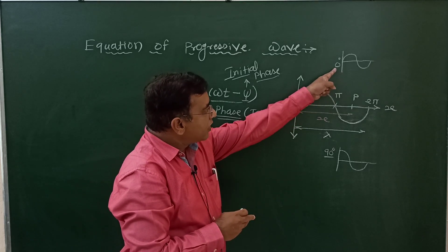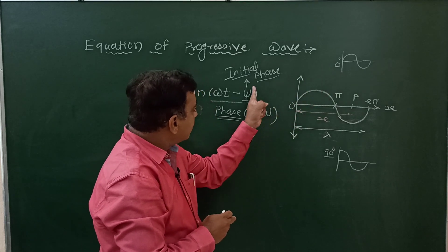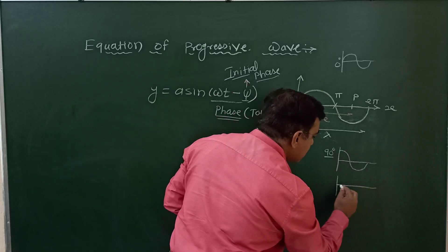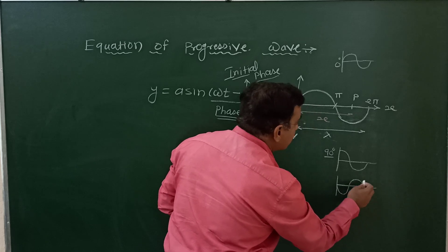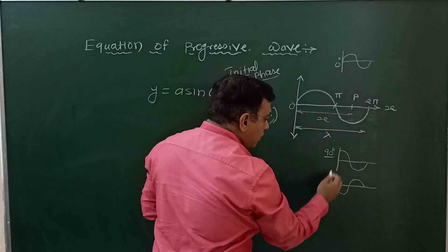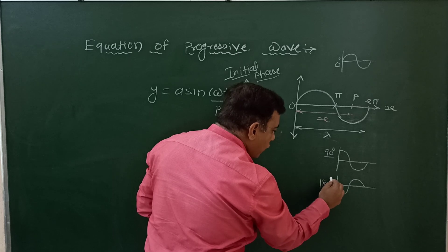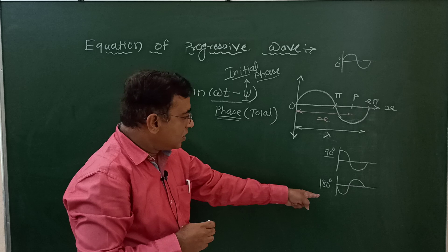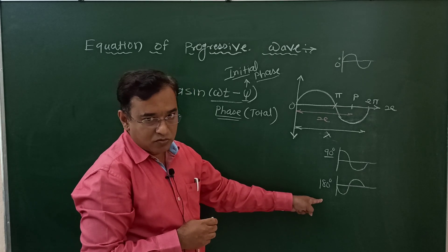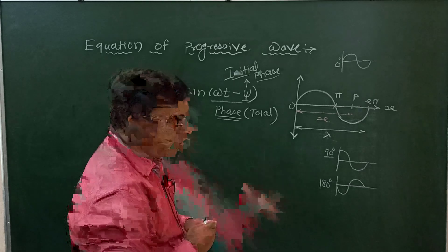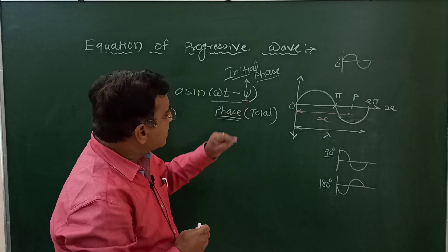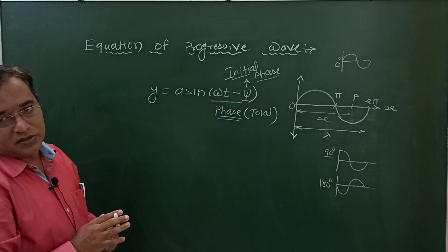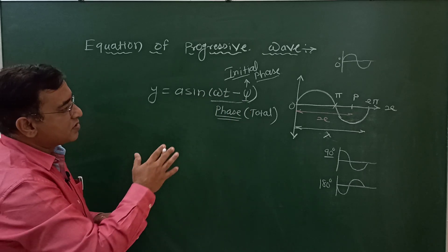In this wave diagram, the phi value is zero. If the wave is opposite — means both are opposite to each other — obviously it is 180 degrees or pi radians. That means the initial phase of the wave is 180 degrees or pi radians. This phi represents the initial phase, whereas omega t plus phi represents the total phase of the wave which is traveling continuously in a given direction.